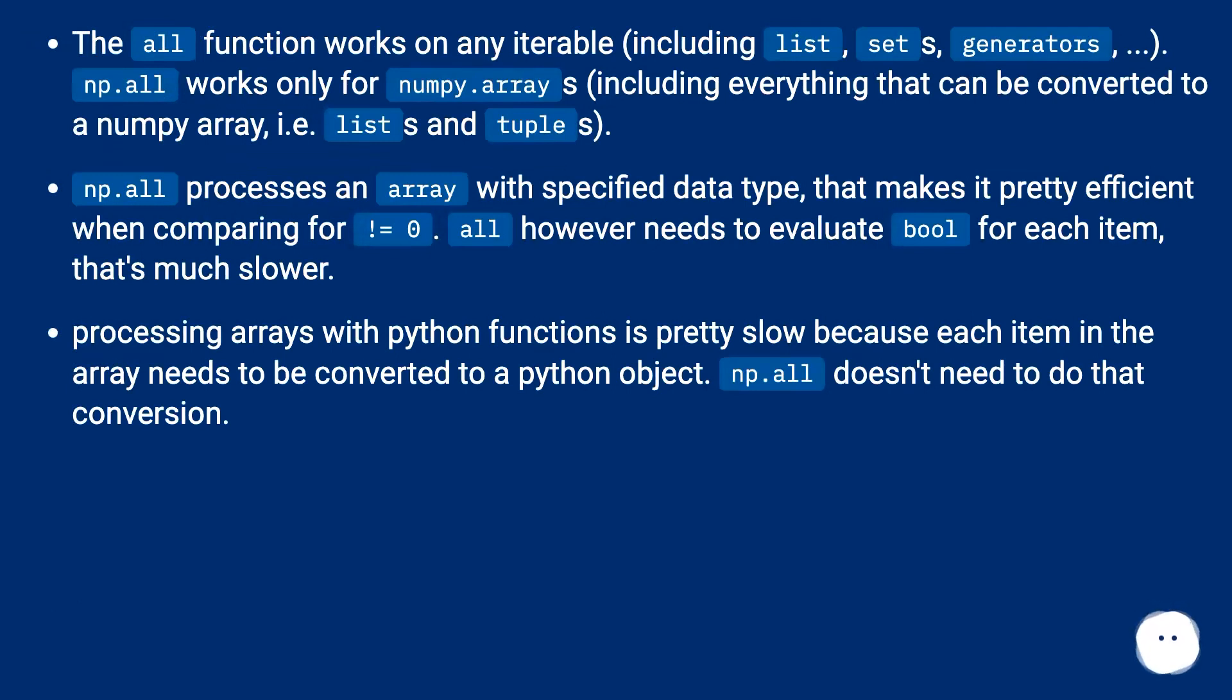np.all works only for numpy.arrays, including everything that can be converted to a numpy array, i.e. lists and tuples.